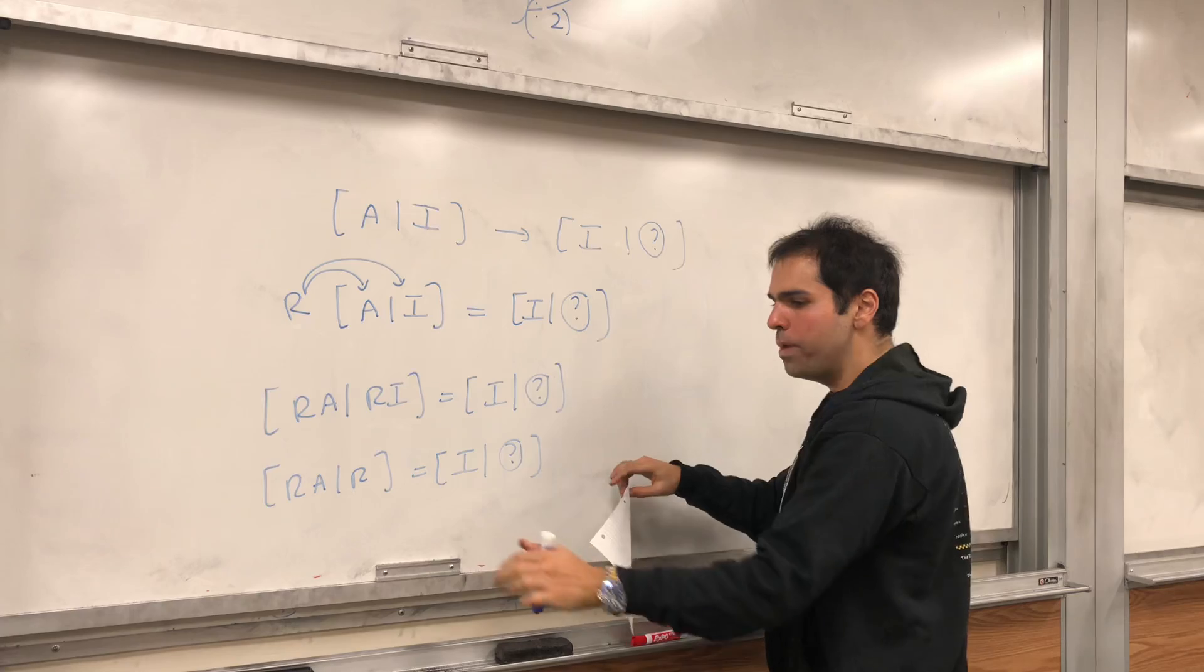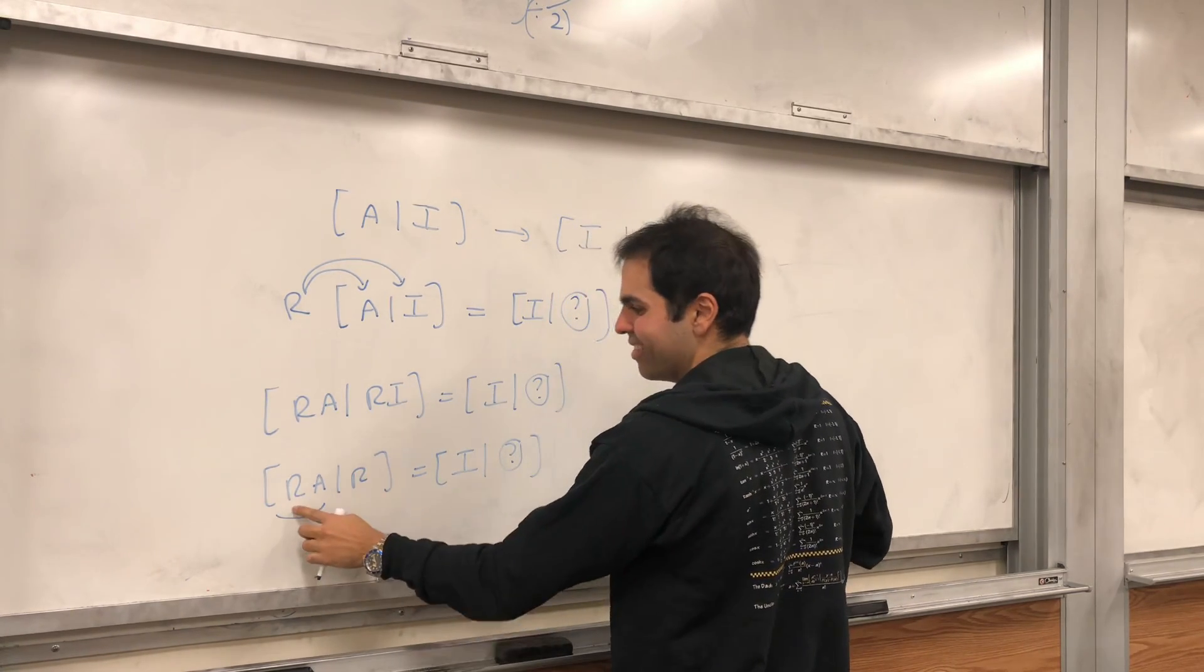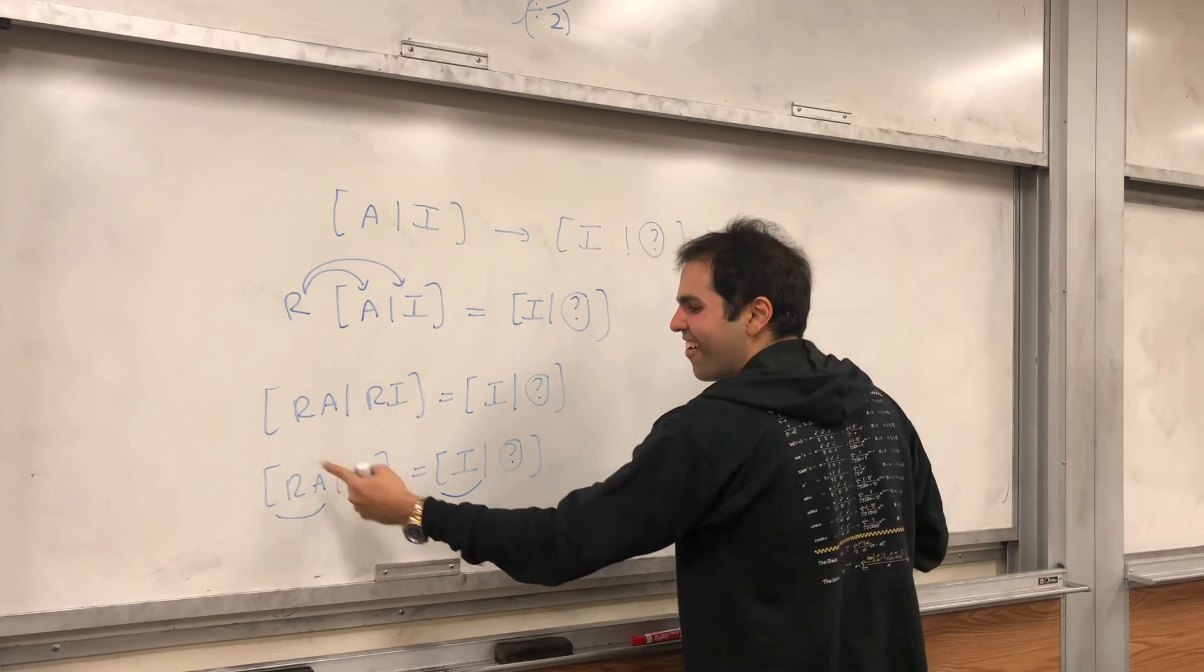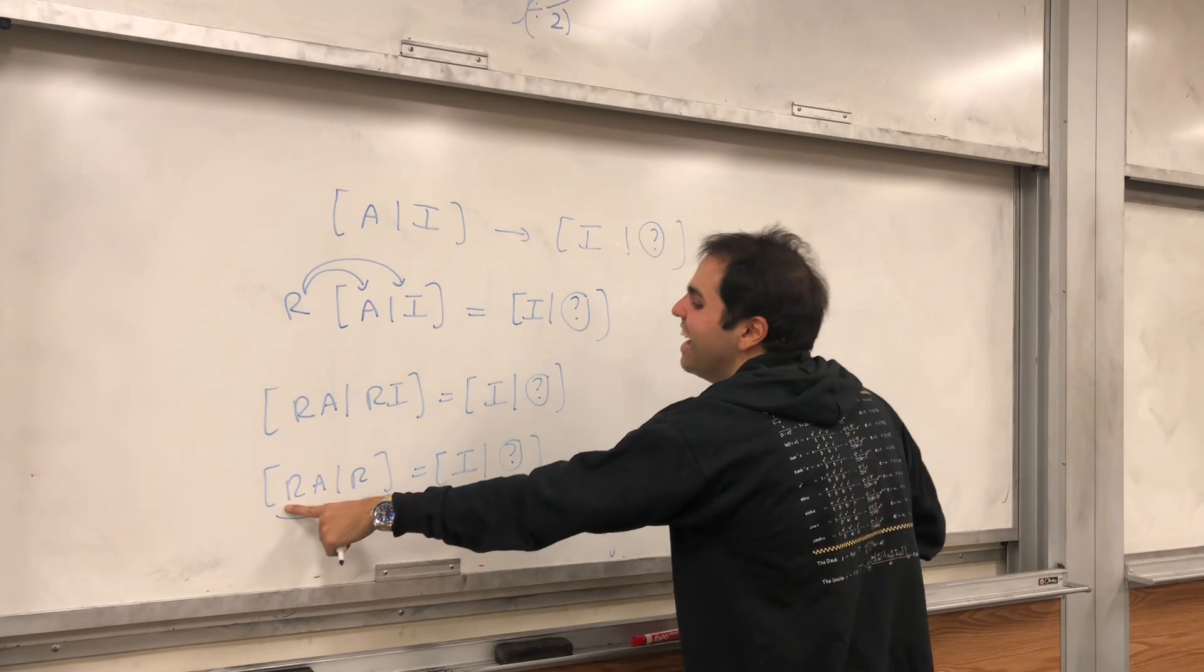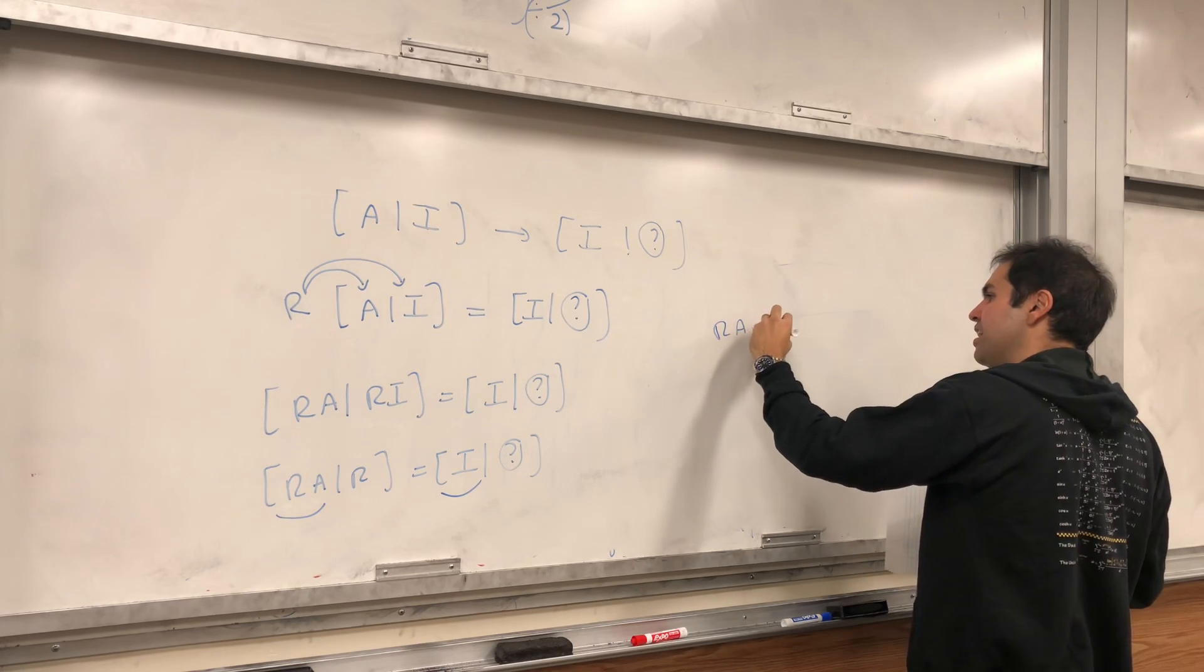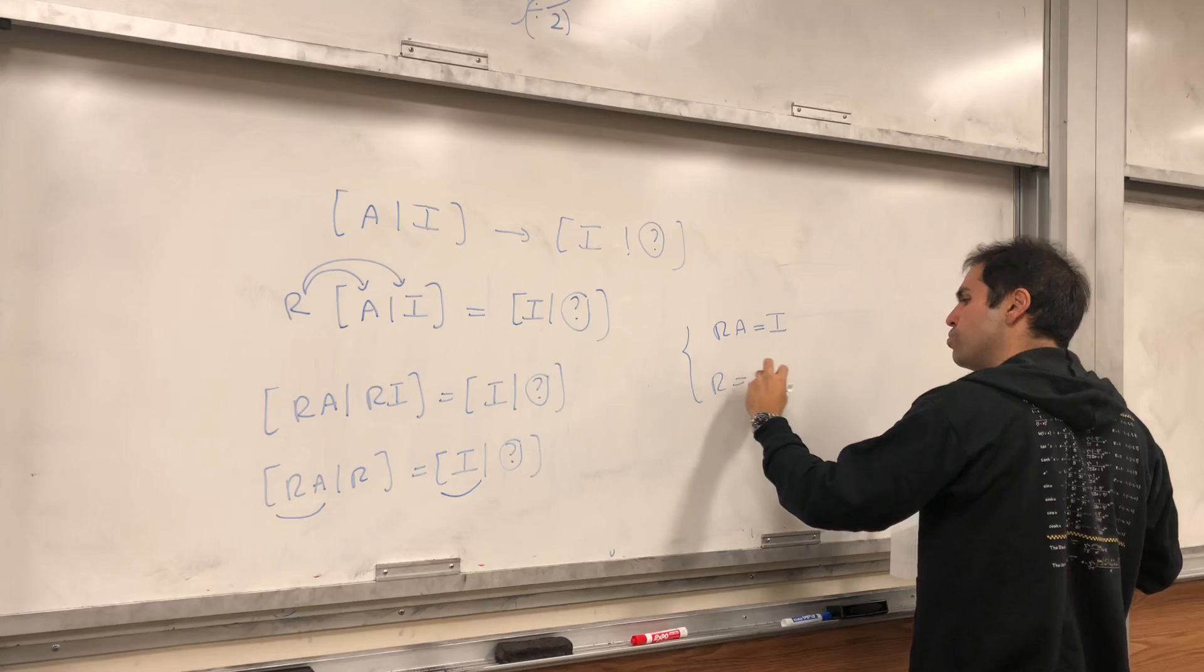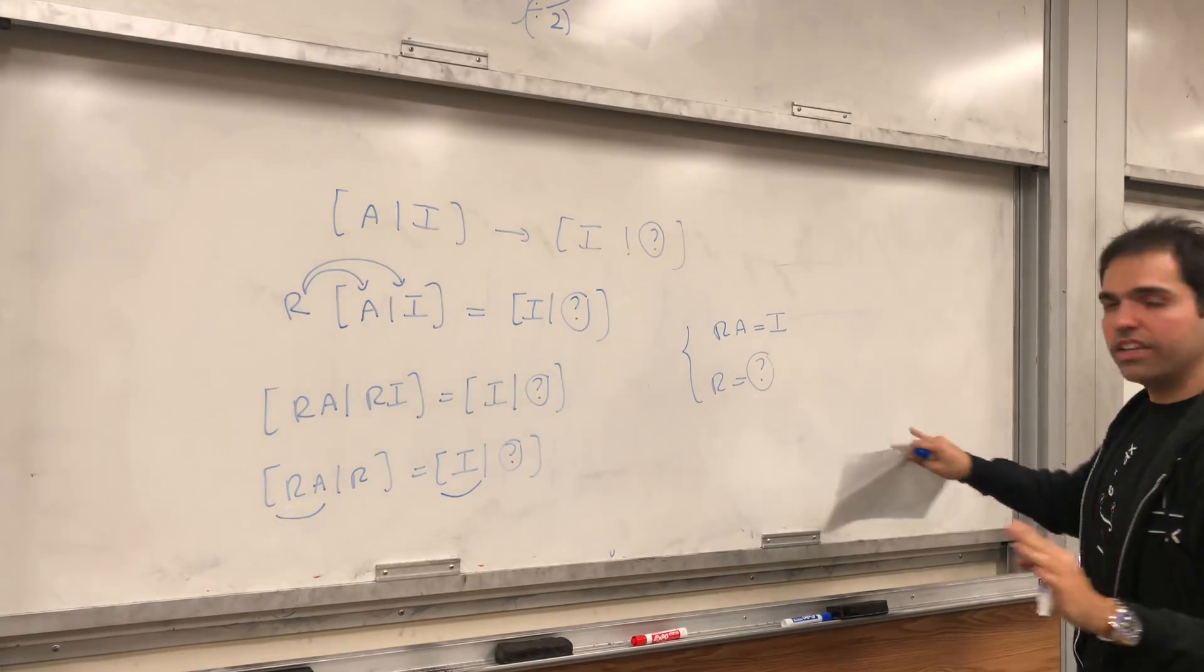Because you have those two big matrices, now you can, looks like a rawr. You can write R A R. In particular, you can compare each component. You get R A equals to the identity and R equals to this question mark. So, already, this question mark is R.